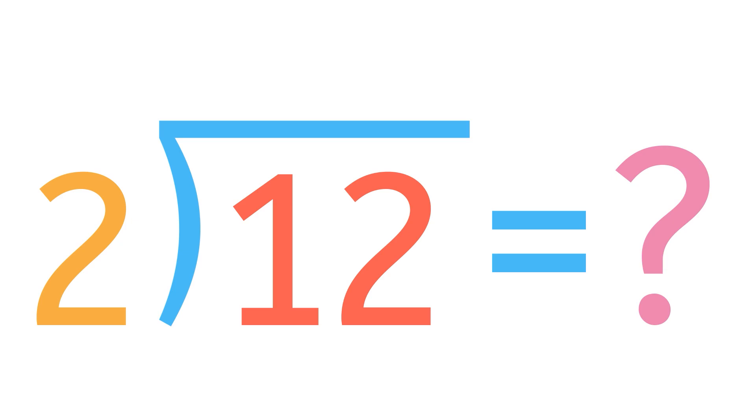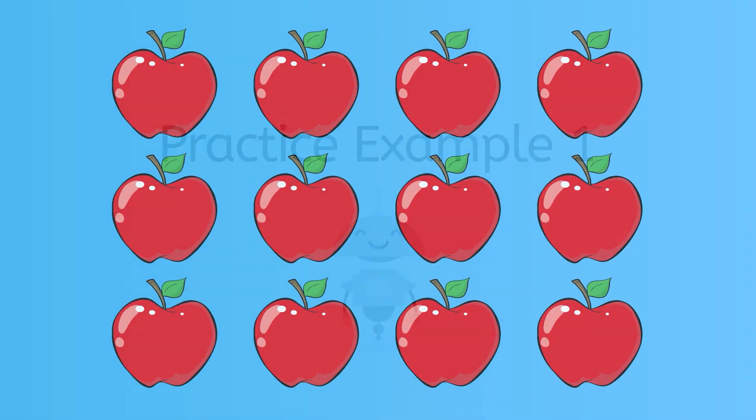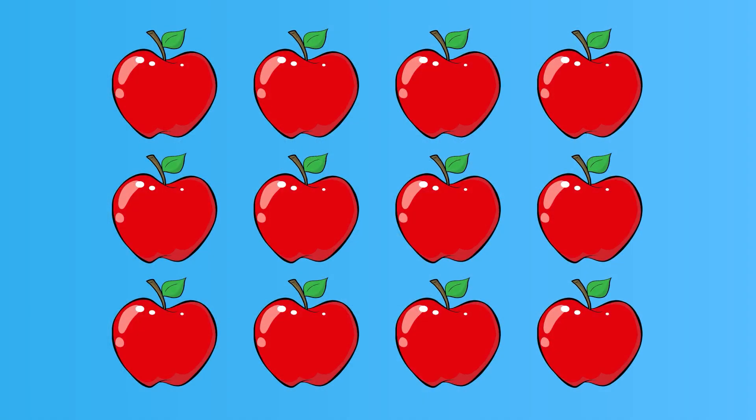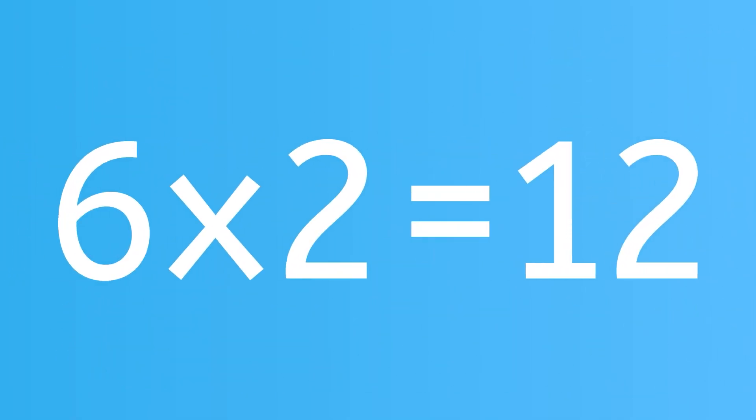What's the quotient in this problem? Let's draw it out. We have 12 apples. We need to divide these into 2 groups. How many apples are in each group? Did you guess 6? You're right. Remember, you can check your work because 6 times 2 is equal to 12.